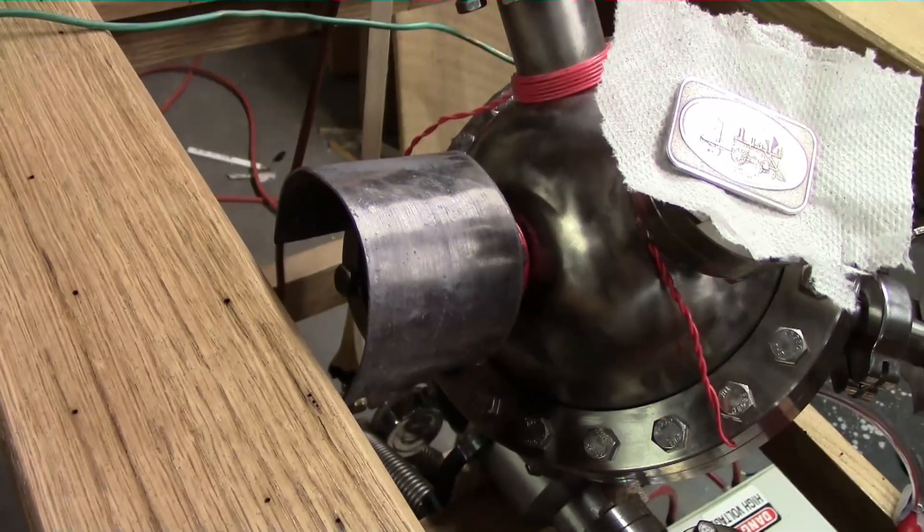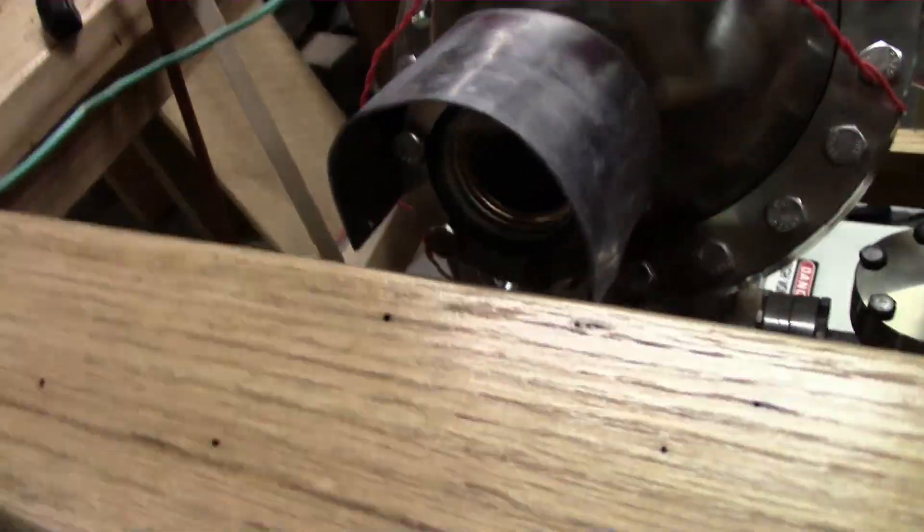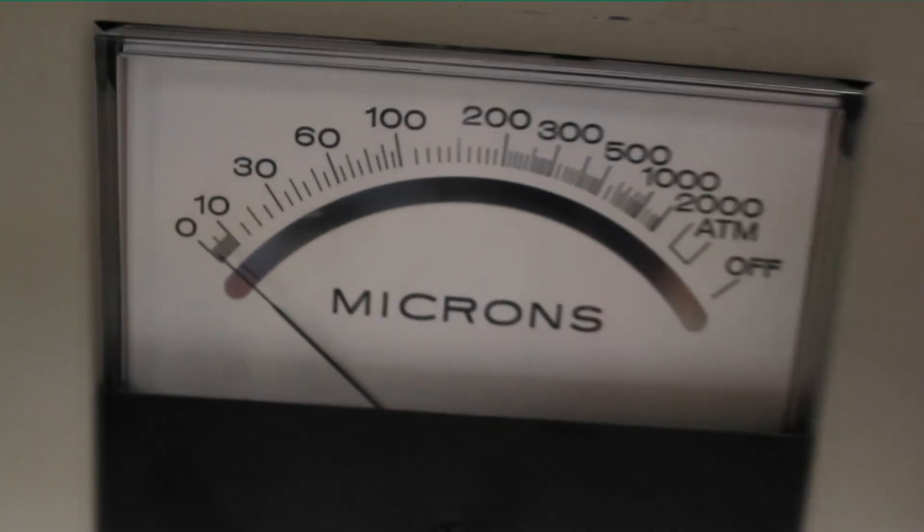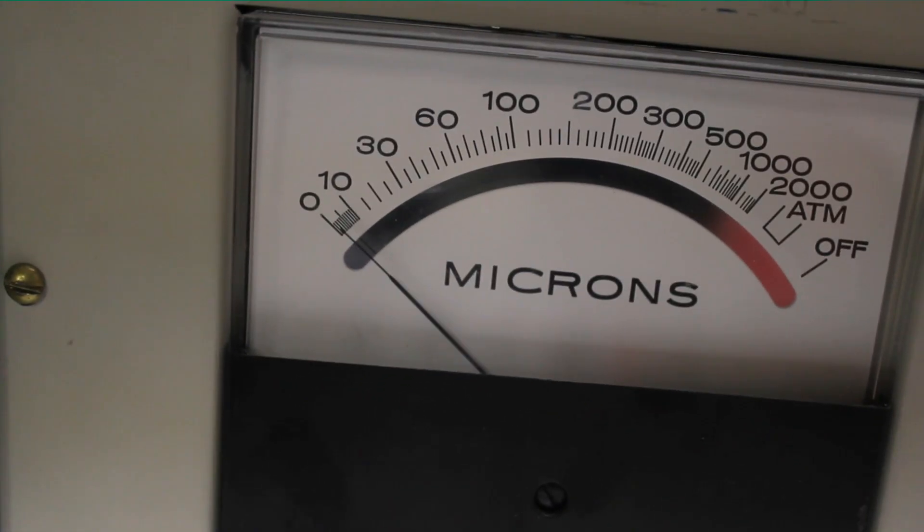It could easily be lethal if you do it wrong. Lead shielding is really important, as this thing will pour out x-rays, but neutrons are only slowed by hydrocarbons. I think this thing's ready to fire up. I roughed the chamber down, then fired up the diffusion pump. It didn't take long for the thermocouple gauge to bottom out.